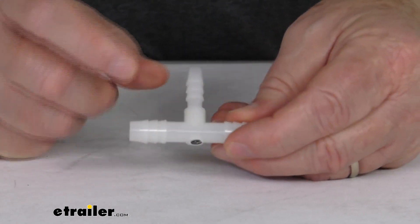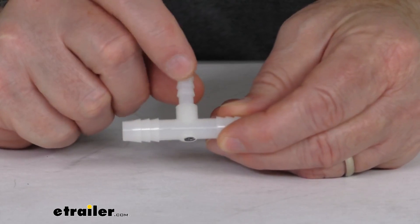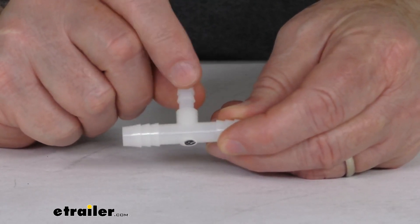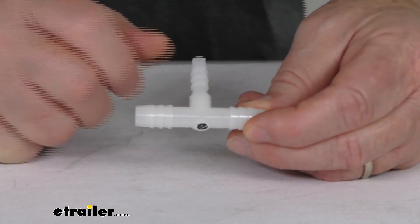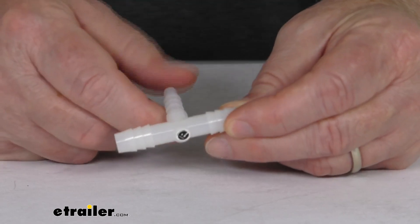If you notice on this T, it has the one 1/4 inch diameter barb fitting and two 3 1/8 inch diameter barb fittings. This is for a quantity of one replacement T.